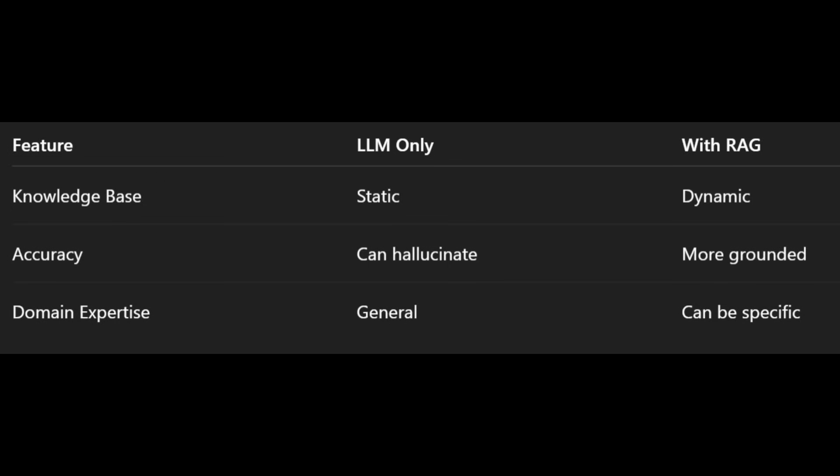Let's do a quick recap. The knowledge base in a purely LLM-based application is static and limited to the training data. In a RAG-based application, the knowledge base is dynamic, and its updates are limited to how often the external sources are updated with new knowledge. LLMs can hallucinate, while RAG-based applications are more grounded to the connected knowledge base. LLMs are usually general unless fine-tuned to a specific domain, while RAG applications are domain-specific.